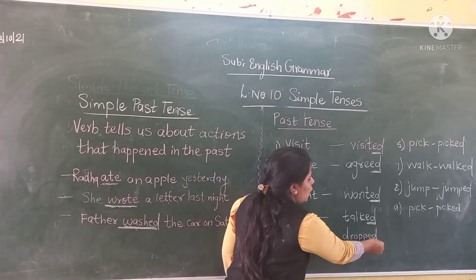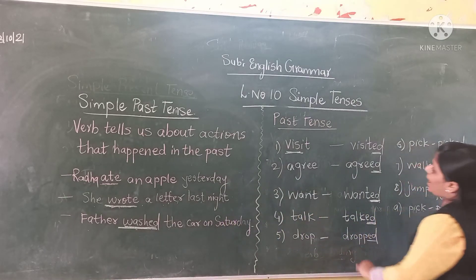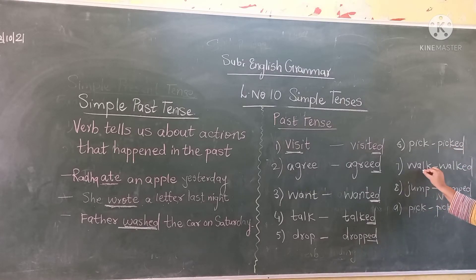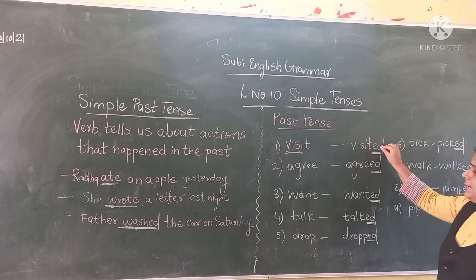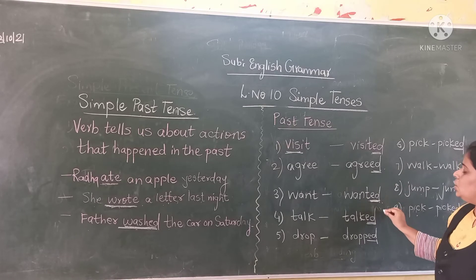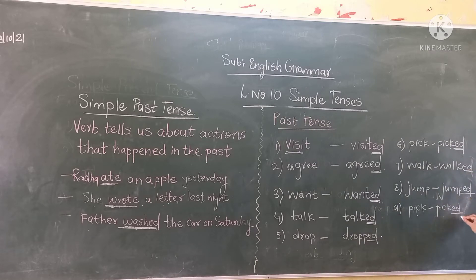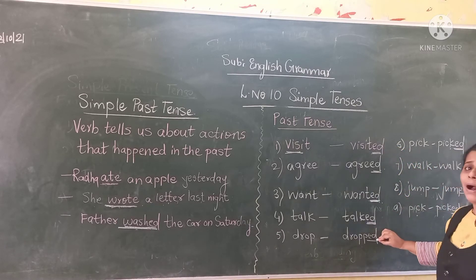More examples: draw → drew, pick → picked, walk → walked, jump → jumped. So students: visited, wanted, talked, dropped, picked, walked, jumped — these words all tell you about past tense.